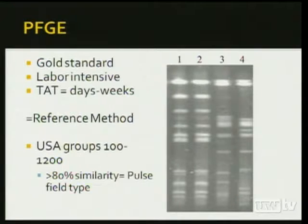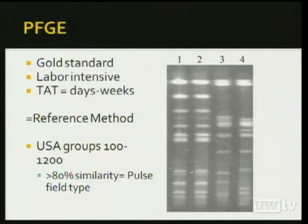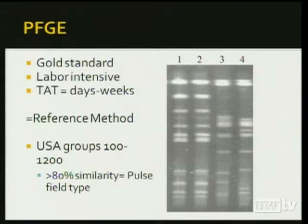Pulse field gel electrophoresis, or PFGE, is something most people are familiar with and it's still considered the gold standard. However, most of the time this technique is performed at a reference laboratory because it is labor-intensive and requires dedicated staff. For Staph aureus specifically, the pulse field types have been divided into the USA groups 1 through 1200, based on similarity depending on the band pattern.